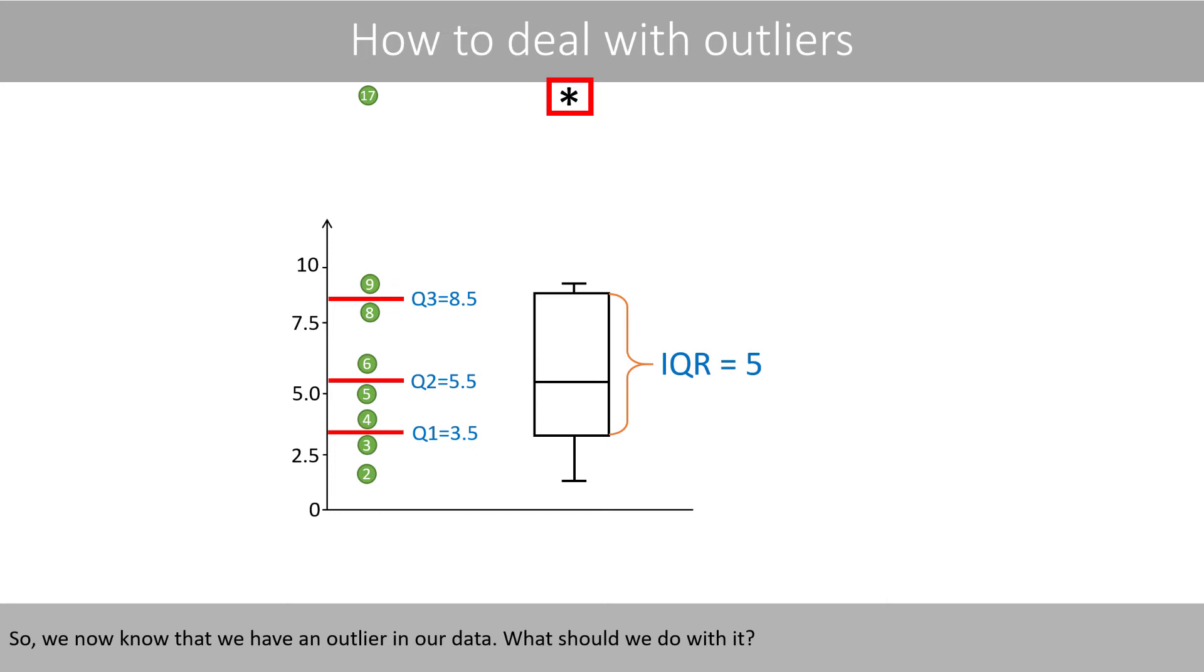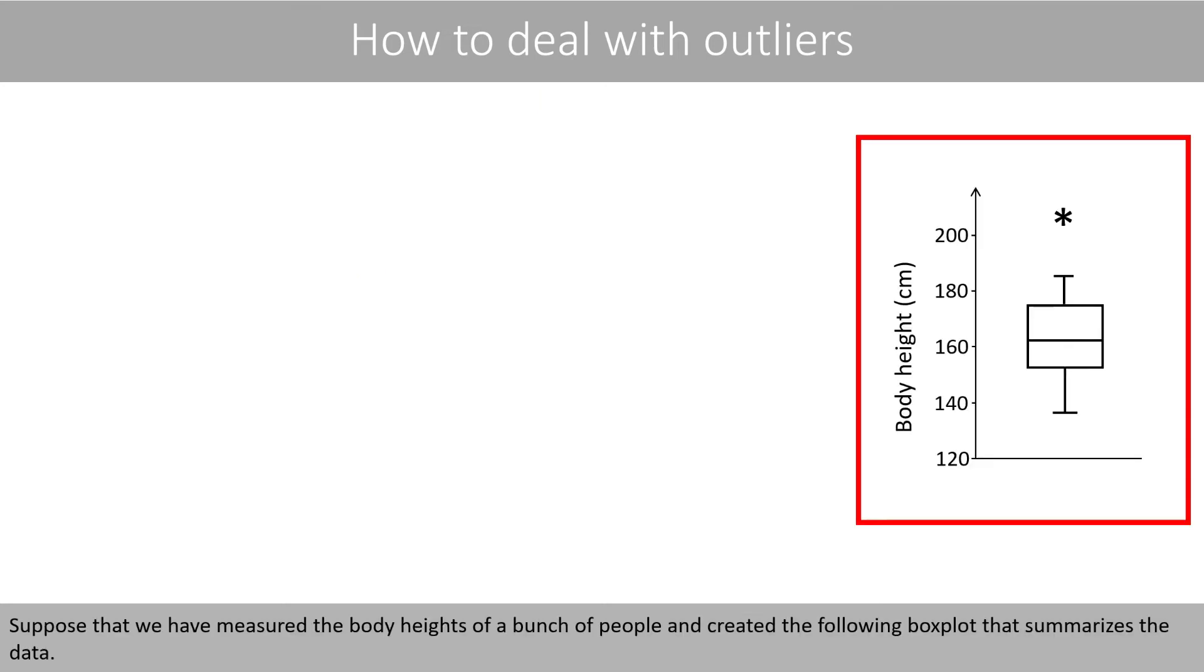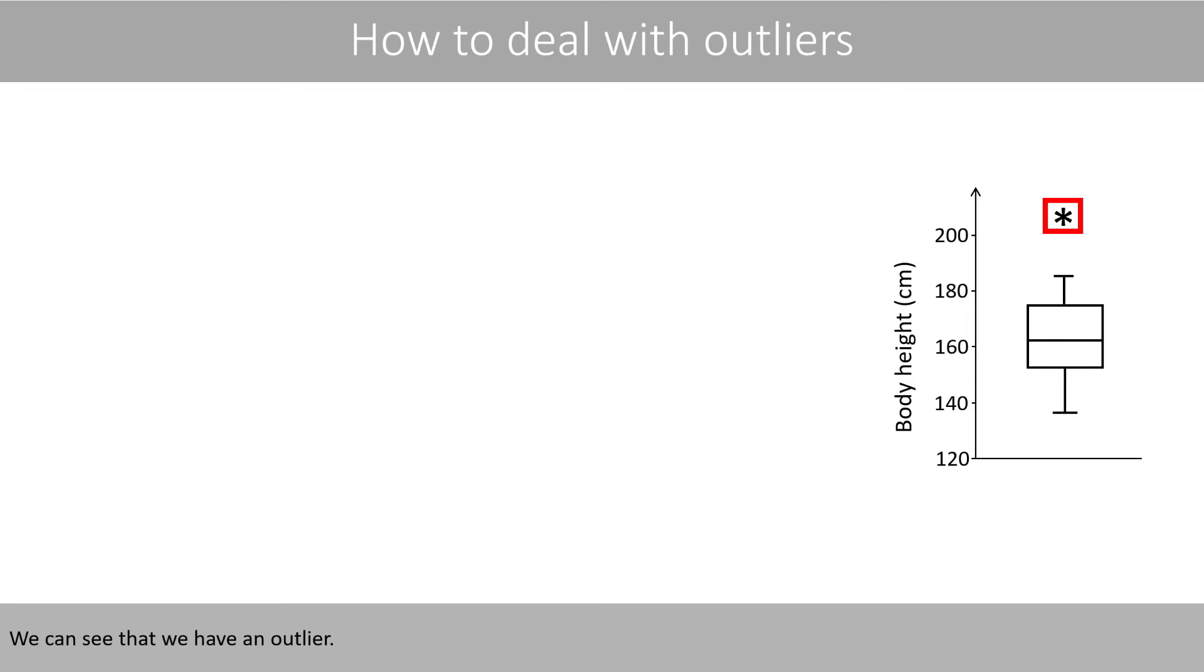So, we now know that we have an outlier in our data. What should we do with it? Suppose that we have measured the body heights of a bunch of people and created the following box plot that summarizes the data. We can see that we have an outlier.